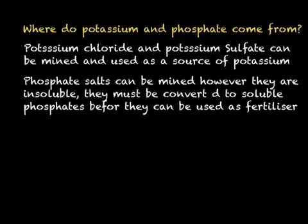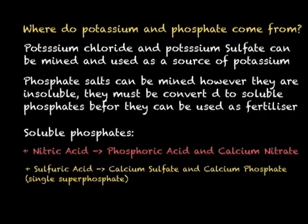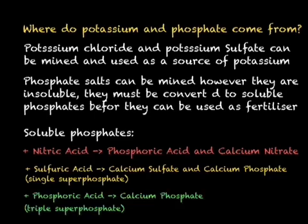In order to make soluble phosphate we can react phosphate rock with a number of different acids. First, reacting it with nitric acid produces phosphoric acid and calcium nitrate. We can also add sulfuric acid, which produces calcium sulfate and calcium phosphate — this mixture is known as a single superphosphate. Finally, reacting it with phosphoric acid produces calcium phosphate, known as a triple superphosphate.